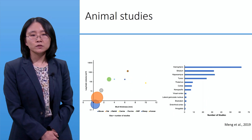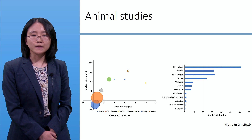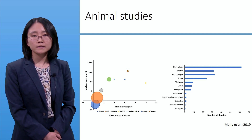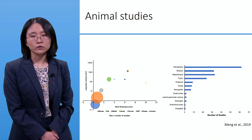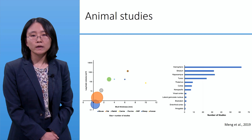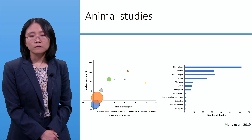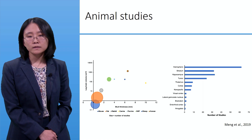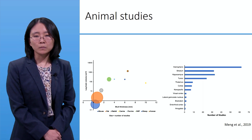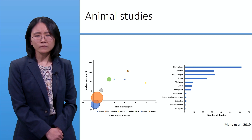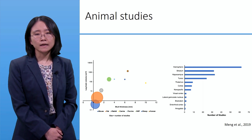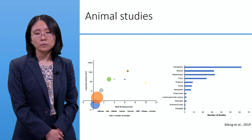One of the main advantages of focused ultrasound is the robust animal data supporting its translation into clinical research. These figures summarize the body of work done in animal models, from small animal rodents to large models including porcine, non-human primates, and sheep, showing the safety and feasibility of blood-brain barrier opening.